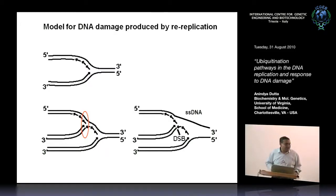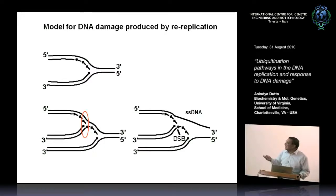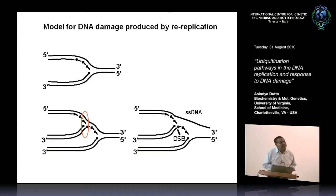This is how the DNA damage is supposed to happen. Here's a replication fork with the leading strand and lagging strand with Okazaki fragments. As this fork progresses, another fork fires and the two forks collide. One leading strand tries to replicate across a nicked template — that is a DNA double-strand break — leading to fork collapse. The helicase and polymerase get delinked, and the helicase goes along to unravel more single-stranded DNA. The net result is a lot of single-stranded DNA and double-stranded DNA breaks produced in re-replicating cells.